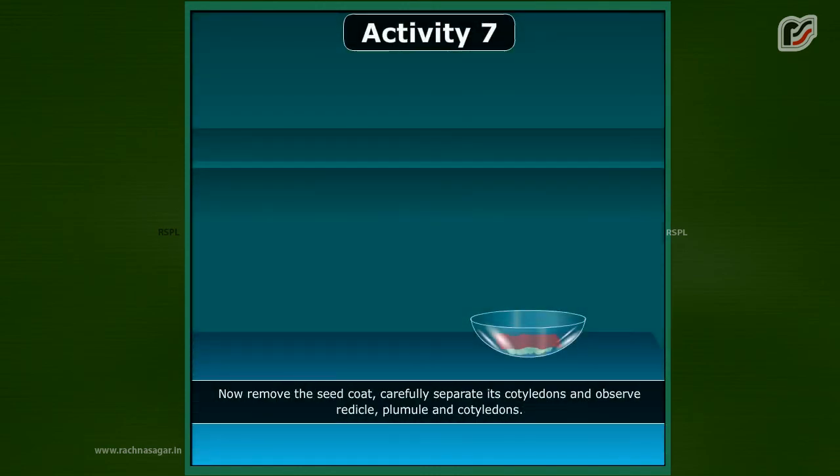Now, remove the seed coat, carefully separate its cotyledons and observe the radicle, plumule, and cotyledons.